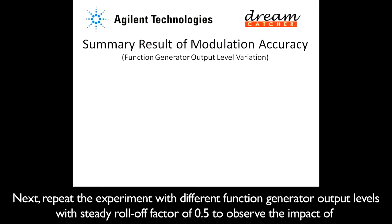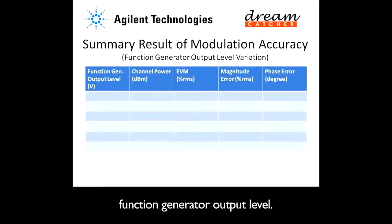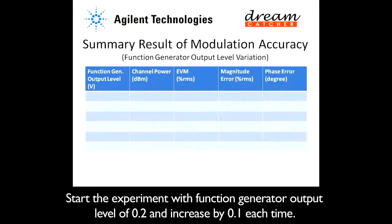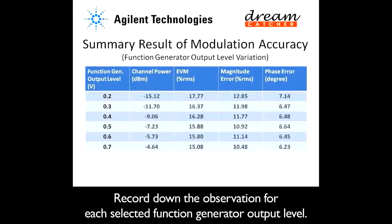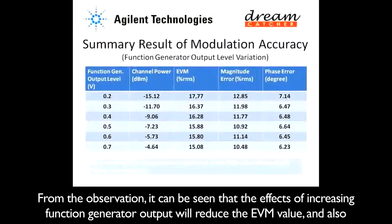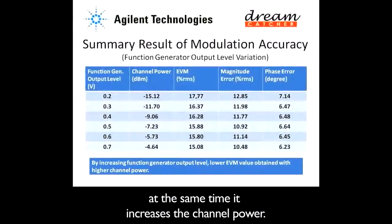Next, repeat the experiment with different function generator output levels with a steady roll-off factor of 0.5 to observe the impact of function generator output level. Start the experiment with a function generator output level of 0.2 and increase by 0.1 each time. Record the observation for each selected output level. From the observation, it can be seen that increasing the function generator output reduces the EVM value and also increases the channel power.